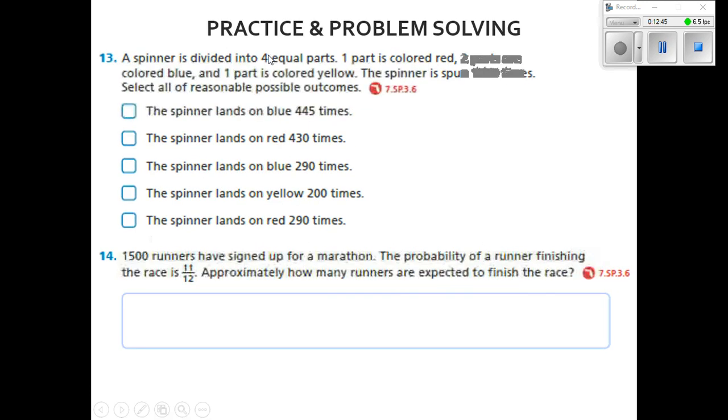Number 13 says the spinner is divided into four equal parts. One part is colored red, two parts are colored blue, and one part is colored yellow. The spinner is spun 1,000 times. Select all of the reasonable possible outcomes.